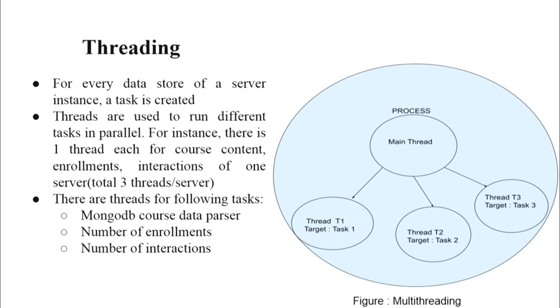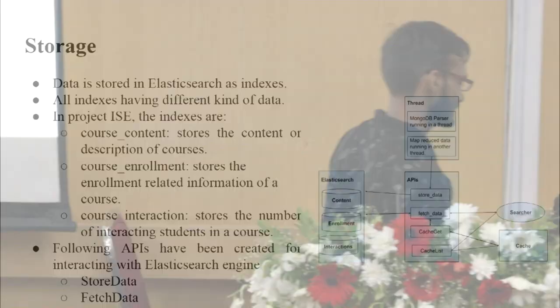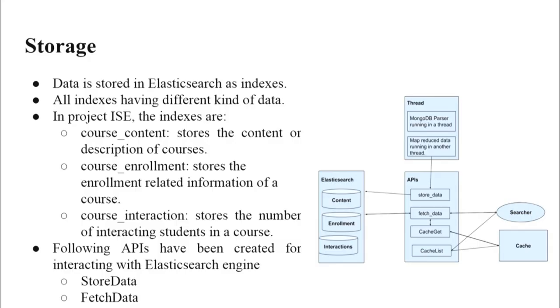After crawling and parsing, we use threading to store MongoDB parser data and MySQL crawler data into Elasticsearch. We create threads for one instance covering MongoDB data, enrollment data, and interaction data — one thread per type of data. In Elasticsearch, we maintain two APIs to store data and three indexes: course content (from MongoDB), course enrollment (from MySQL), and interactions (from MySQL). When a thread is called, it calls the store data API and the data is stored in Elasticsearch.